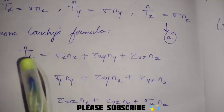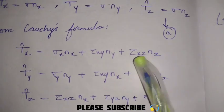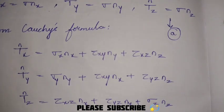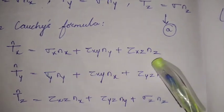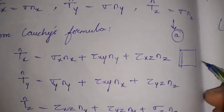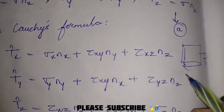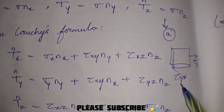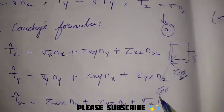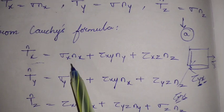From Cauchy's formula: tx equals sigma_x*nx + tau_xy*ny + tau_xz*nz. Remember, whenever we are talking about x only, that x term is the normal stress and the remaining ones for ny and nz are shear stresses. This is the diagram - sigma x in the x direction is the normal stress, but there is also tau_yx (y in x direction) and tau_zx (z in x direction).